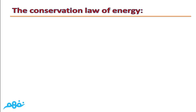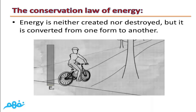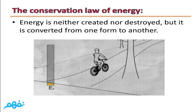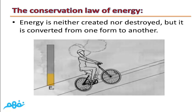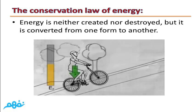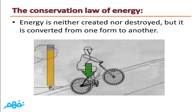The second law is the conservation law of energy. This law states that energy is neither created nor destroyed, but it is converted from one form to another. For example, if we have a person who rides a bicycle, his potential energy will increase gradually because of his height from the ground.